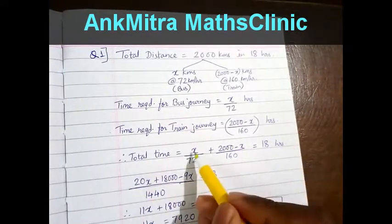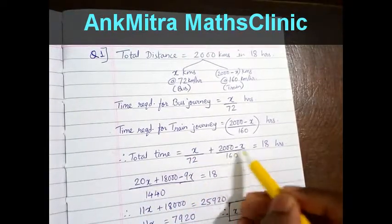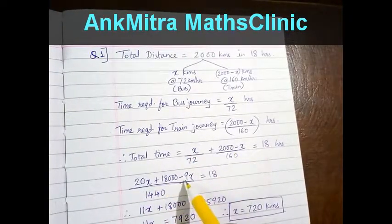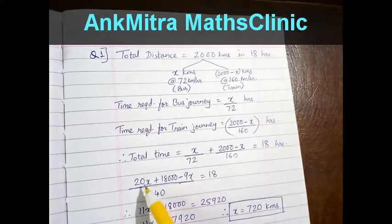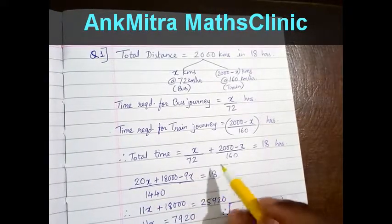We get this numerator as 20x and this numerator as 18000 minus 9x. So this becomes our new equation.